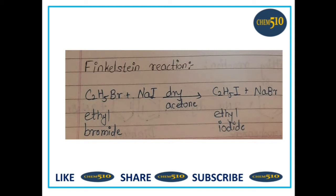The third reaction is Finkelstein's reaction. It is an organic reaction where an alkyl halide is converted into another alkyl halide by reacting with a metal halide salt. In this example, ethyl bromide on reaction with sodium iodide in presence of dry acetone forms ethyl iodide, and sodium bromide is a byproduct. So conversion of one halide into another halide takes place in Finkelstein's reaction.